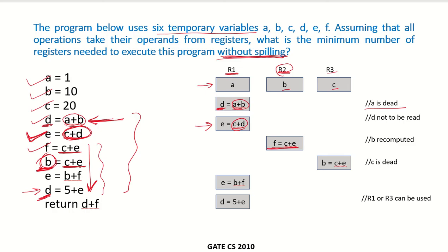So f we have put over here and we are overwriting b. The next instruction is requiring the addition of c and e and recomputation of the variable b. So c plus e we can recompute and now since in further instructions c is not being used anywhere because c is now dead.